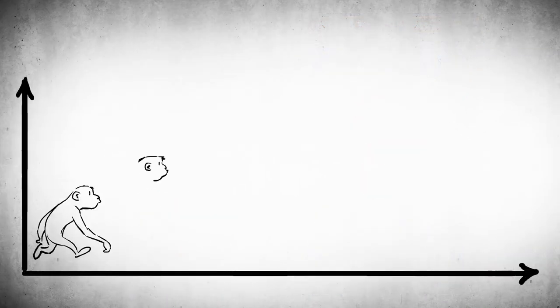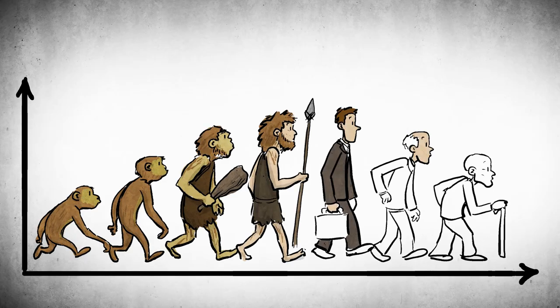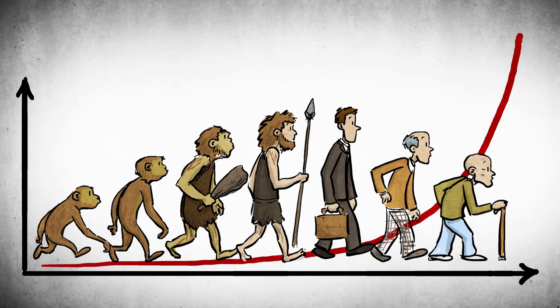If you look at it evolutionarily, our lifespan only recently has been so long. The lifespan 150 years ago was something like 40 years old, and 1,000 years ago was maybe 25.